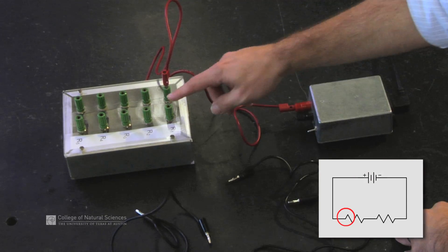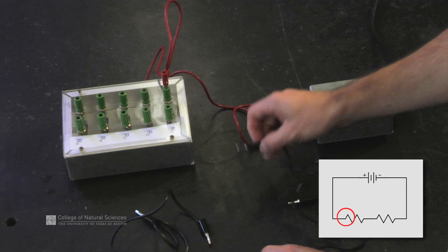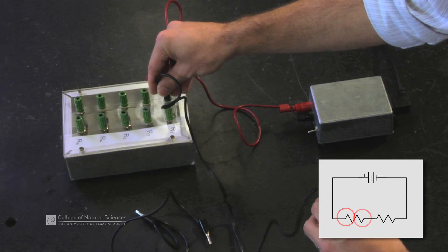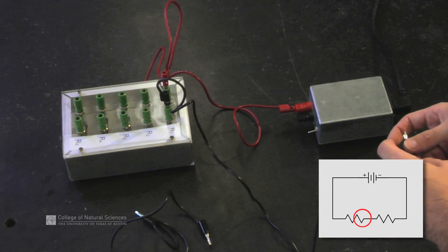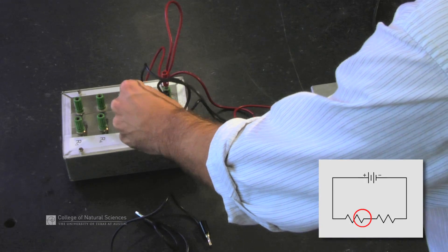The next thing that the resistor is connected to is not back to the power supply, but in this case it's connected to a second resistor. So we'll connect a second wire to the resistor and we'll connect the other end of that second wire to a second resistor.